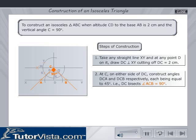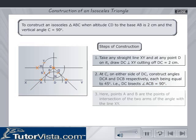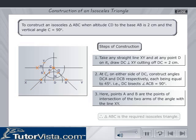Here, points A and B are the points of intersection of the two arms of the angle with the line XY. Therefore, triangle ABC is the required isosceles triangle.